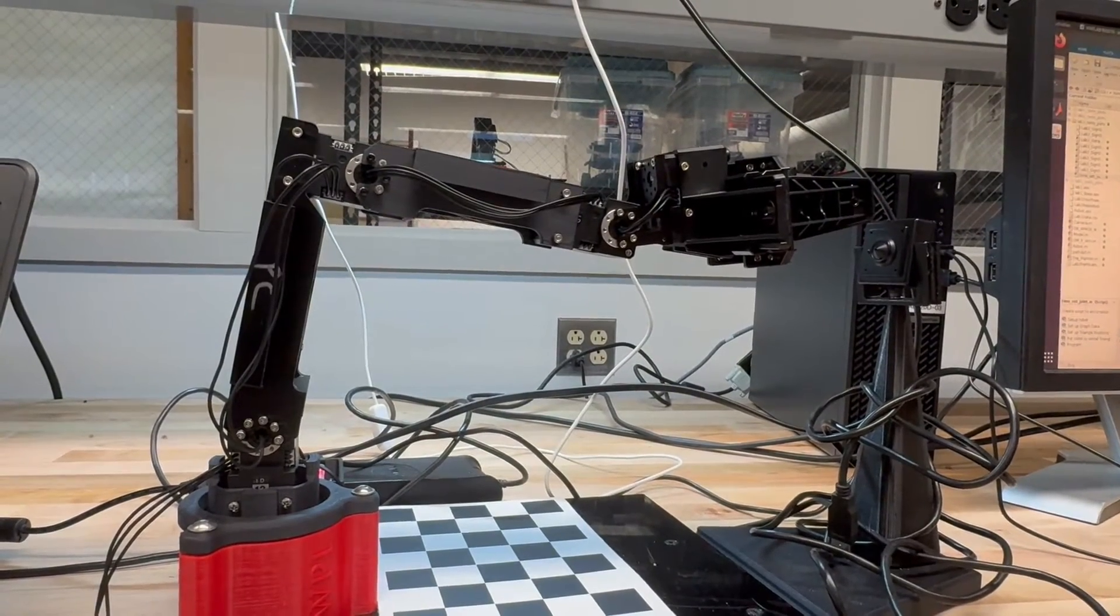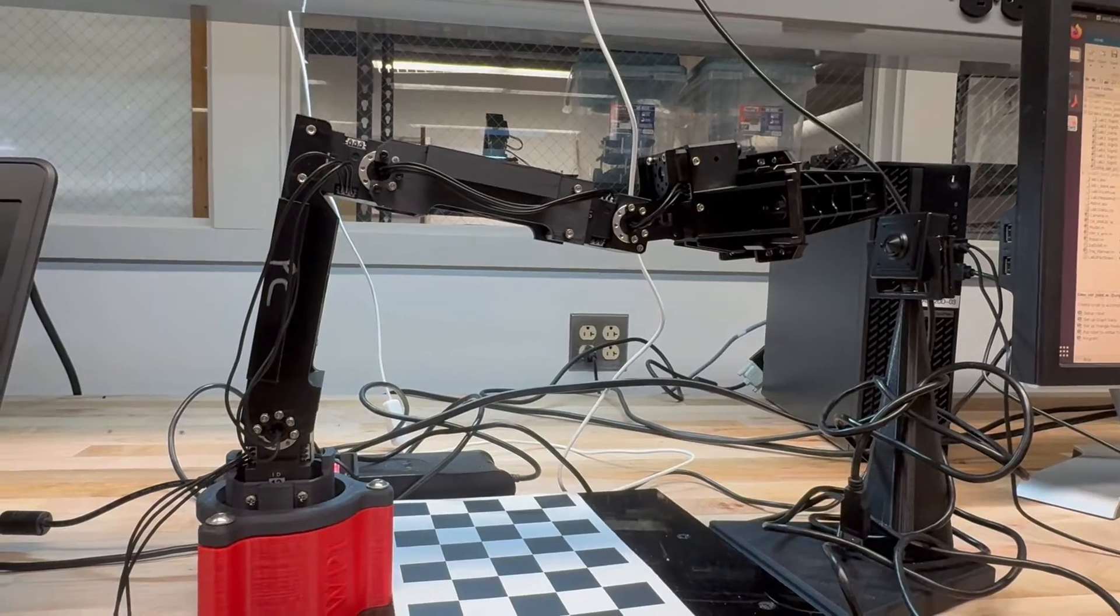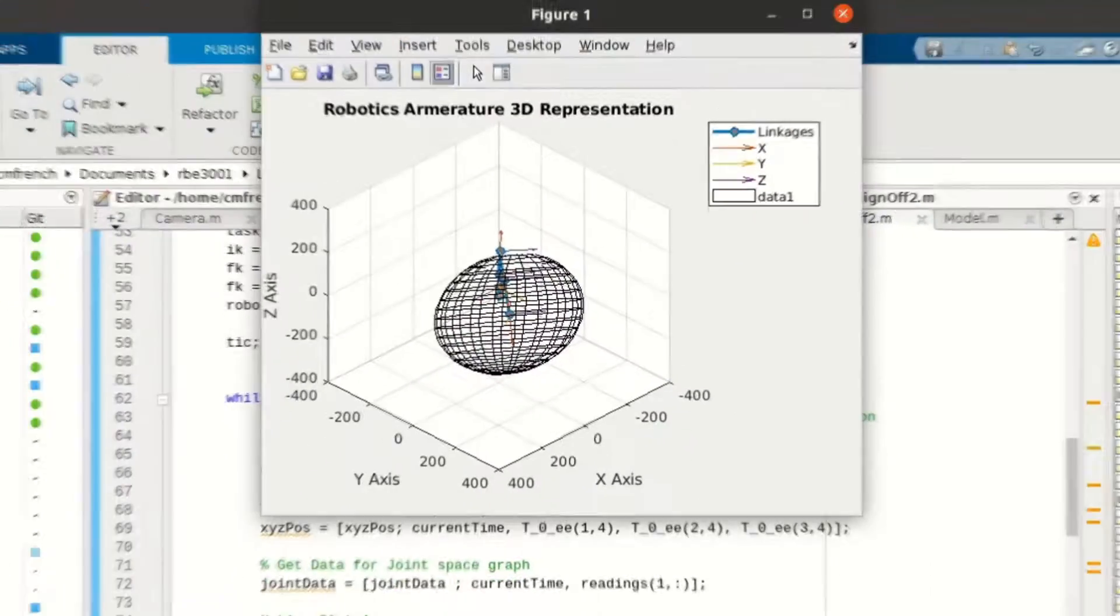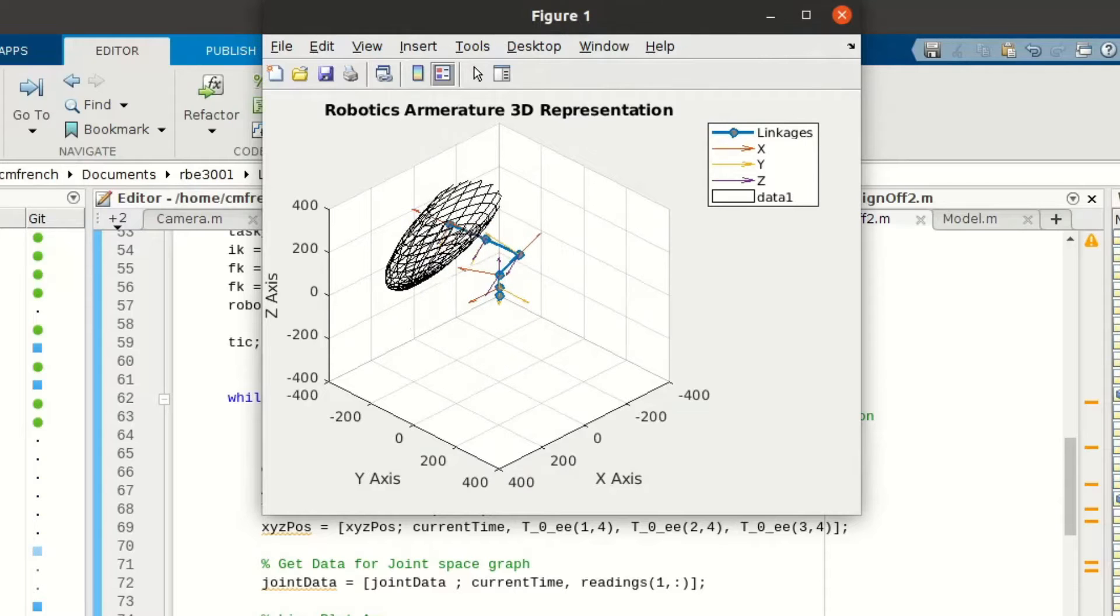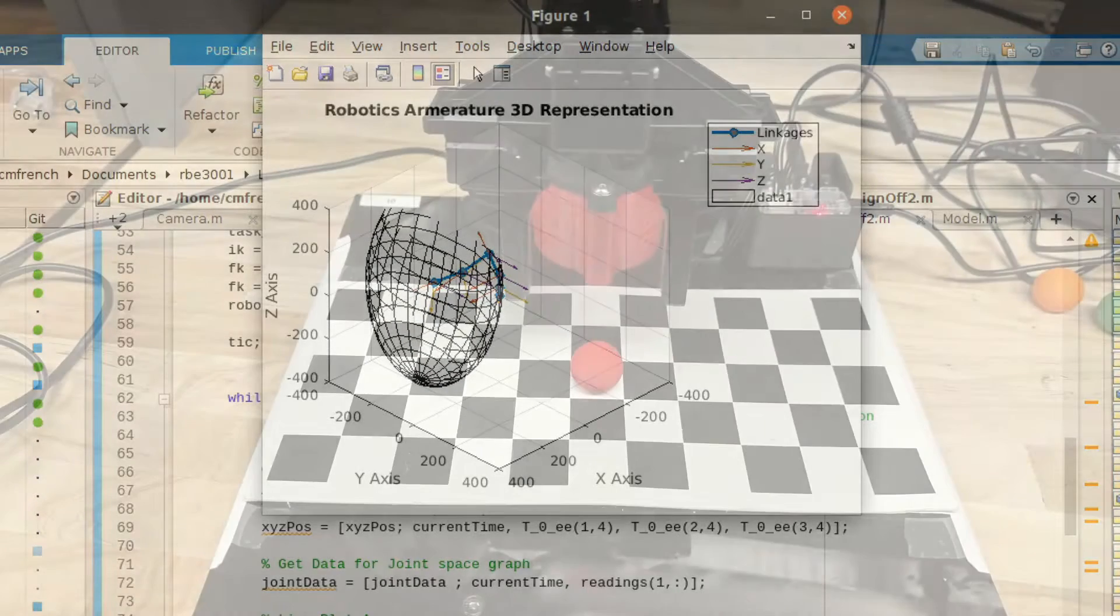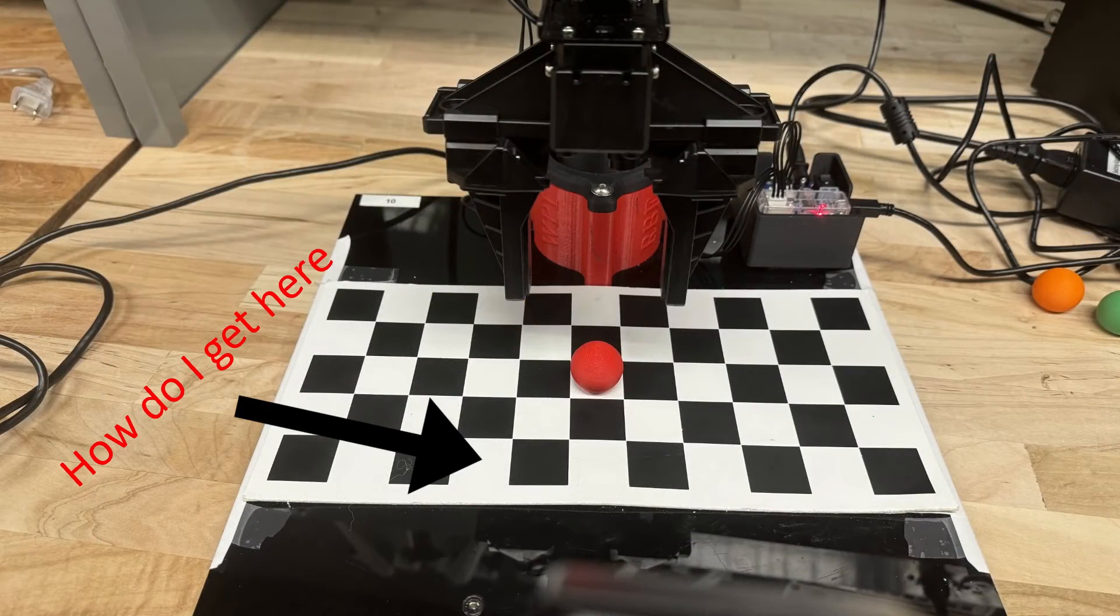This allows us to do our first method of control. By giving the robot a vector of joint variables, we can identify the configuration of the end effector. While forward kinematics allows us to understand the position of the robotic arm using joint variables, it does not give us control over where the robot is in the workspace.